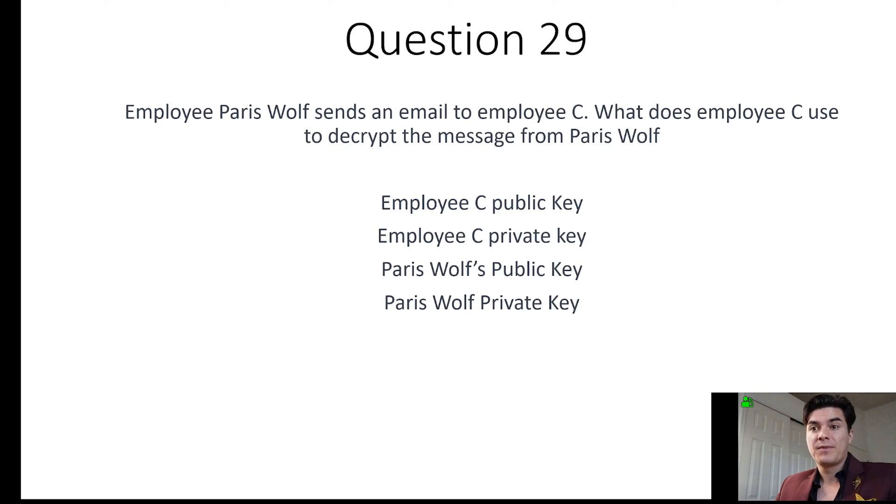Now, for question 29, employee Paris Wolfe, that's me, sends an email to Employee C. What does Employee C use to decrypt the message from Paris Wolfe? So my system is going to get the public key for Employee C from the public key infrastructure, and it's going to encrypt that email with Employee C's public key. And then when Employee C receives that email, they're going to decrypt it with their private key. So the answer is Employee C's private key.